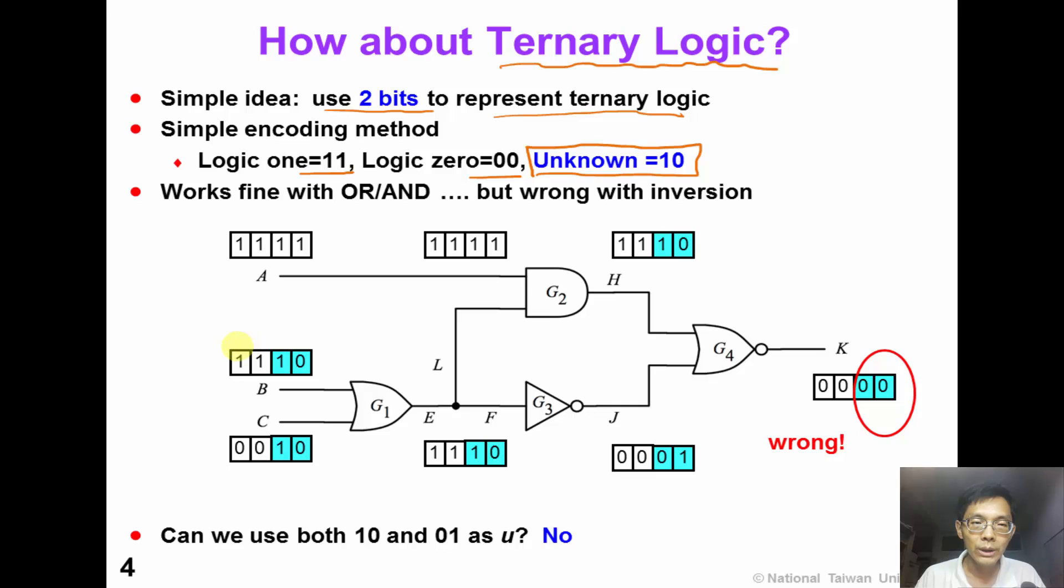This idea works fine with AND gate or OR gate, but it has some problem with inverter. For example, we can use two bits to represent one pattern. So the first pattern is 1, and the second pattern is unknown. After bitwise operation, the output of OR gate G1 is 1 and U. This is the correct answer.